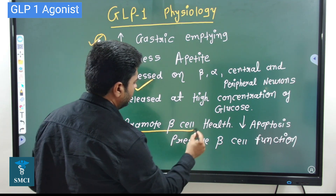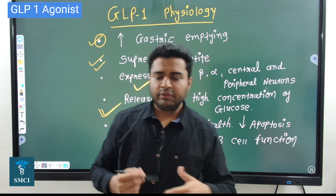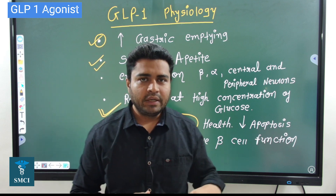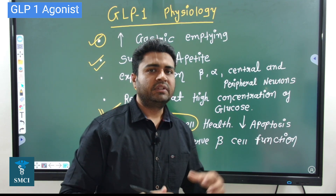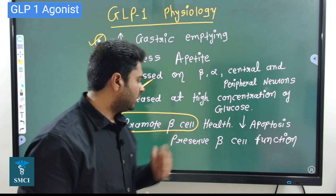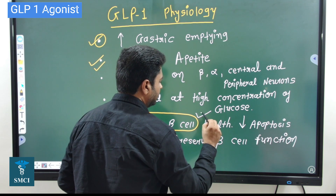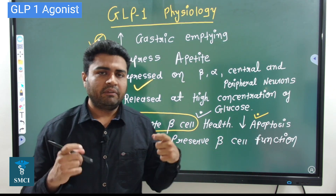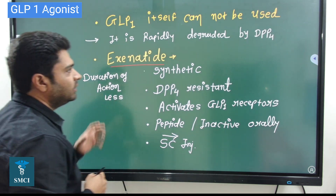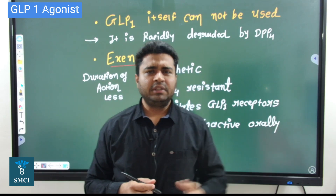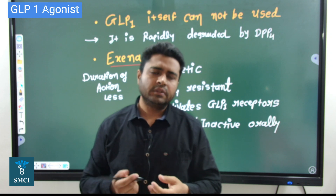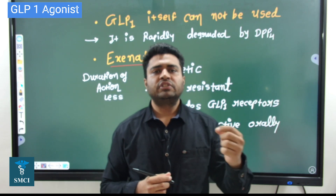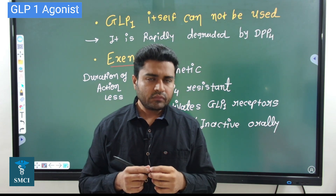The idea is to make a GLP-1 analog from outside. If you make the GLP-1 analog synthetically, the physiological main effects — increased insulin release, decreased glucagon, suppressed appetite, increased gastric emptying — will do the same thing. Another key function of these GLP analogs is they also improve beta cell health; they decrease apoptosis of the beta cell, so pancreas functionality will be preserved after giving these medications.